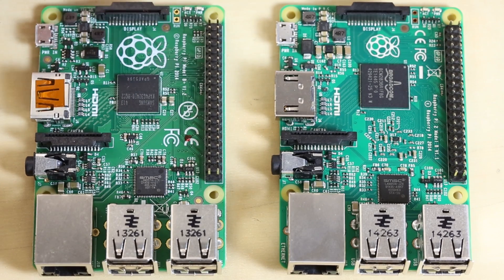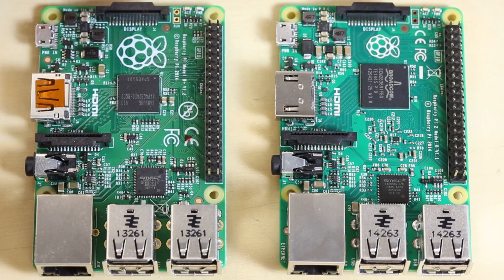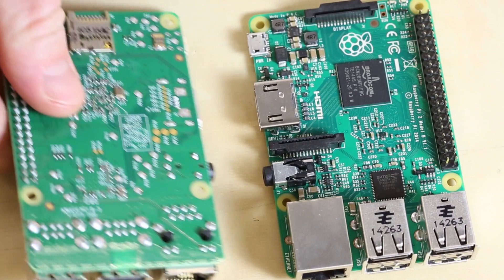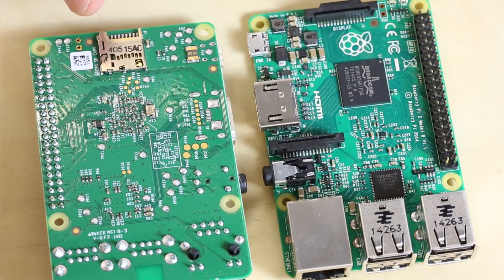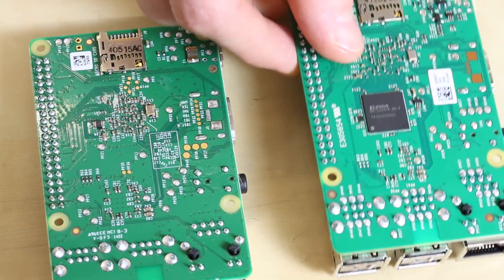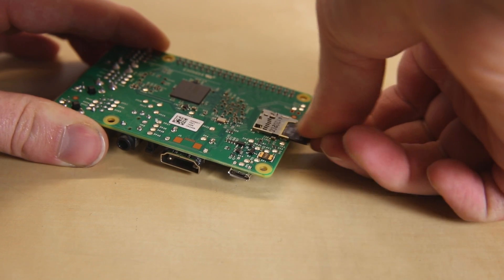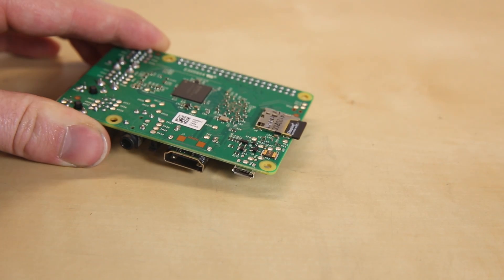There's also a display port over here for another flex cable. And if you turn it over, there's a micro SD card on the underside of both of them. This is for storing your image of your operating system and any other files you want to keep on the Pi.